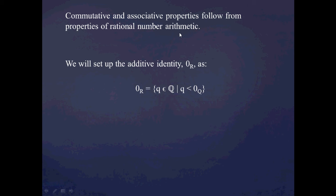One other thing we need when considering addition upon Dedekind cuts is the additive identity — the real number which, when added to any other real number, doesn't change it. We're going to call this the zero element of R. The zero cut, or zero sub R, is going to be all the rational numbers which are less than zero.